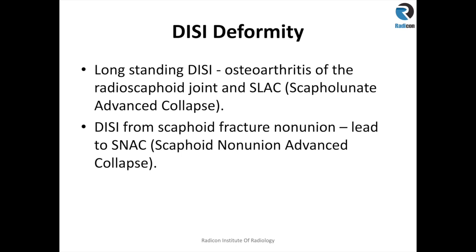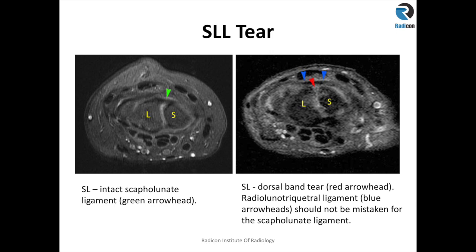Here is an example of a tear of the dorsal band. The green arrowhead indicates the intact dorsal band of the scapholunate ligament. On the second image on the right, the dorsal band cannot be clearly identified and there is intermediate signal present, which indicates a dorsal band tear of the scapholunate ligament.